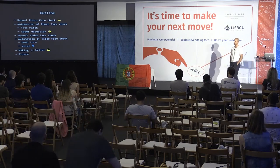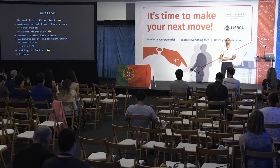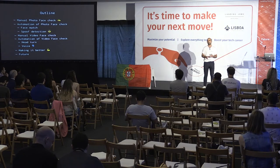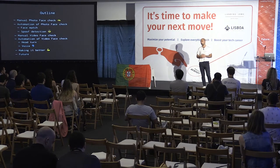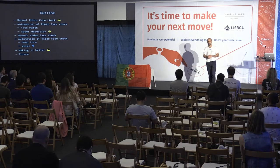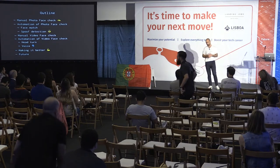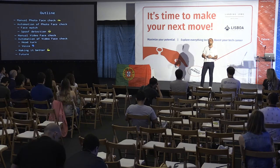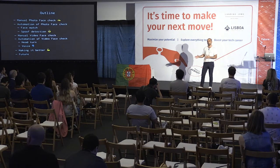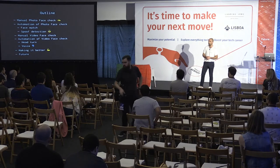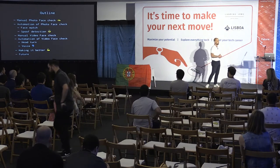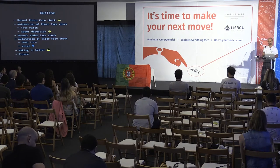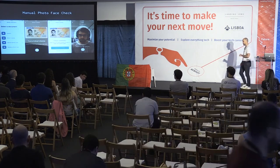The outline for this talk is as follows: I'm going to start and talk about the manual photo face check, how we automated it via automatic face match, and then automation of ways of catching spoofs via algorithms for spoof detection. Then I'm going to move on to the manual video face check, and explain the audio challenge and the head turn challenge.